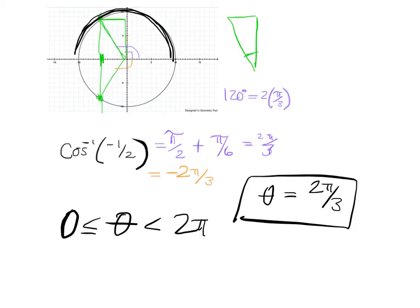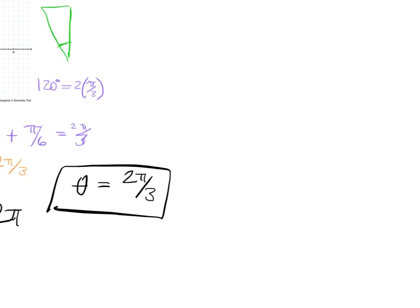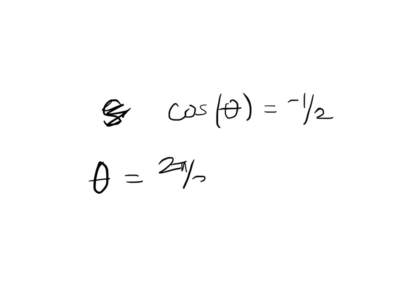That's different from, let's say we're trying to solve the equation, cosine theta equals negative 1 half. Now there are lots of answers. Right. One of the answers we agree is 2 pi over 3.